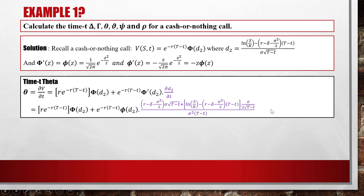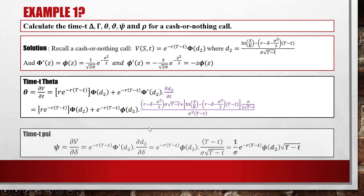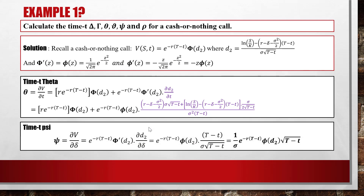For Psi (partial derivative of V with respect to delta): only D2 contains delta, and D2 is a linear function of delta, making this differentiation straightforward. Keeping e to the minus r(T-t) as a constant and differentiating capital Phi(D2) via the chain rule gives lowercase phi(D2), then the derivative of D2 with respect to delta is minus square root of (T-t) over sigma. After simplification, Psi equals minus 1 over sigma times e to the minus r(T-t) times phi(D2) times square root of (T-t).